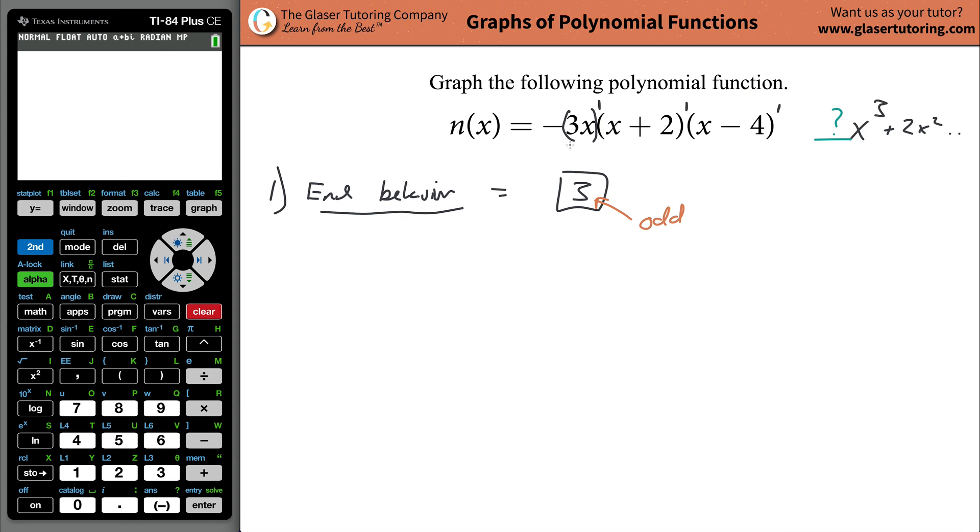When you have it in factored form, you're just looking at the beginning. If there's a negative sign, it's going to be a negative leading coefficient. If it's a positive sign or it's not there, then it's going to be positive. But in this particular problem, I have a negative leading coefficient.